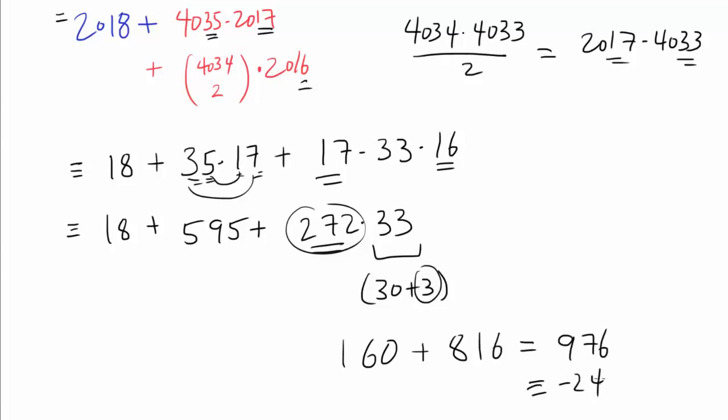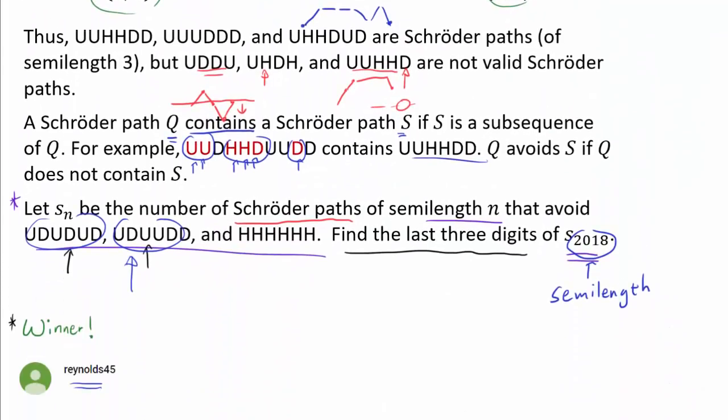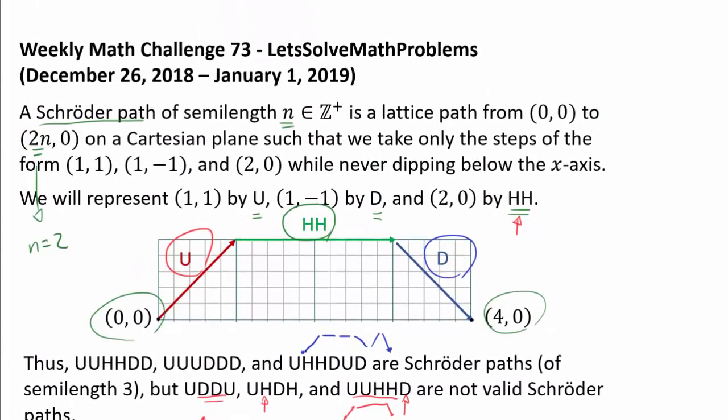Which is in mod 1000, negative 24. So we have 18 minus 24, or negative 6, plus 595, for the final answer, 589 mod 1000. So that's the last 3 digits of S_2018. So our final answer is 589, and we are done.